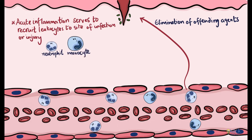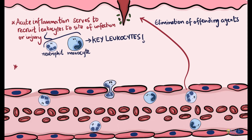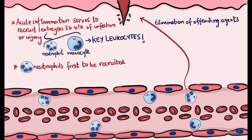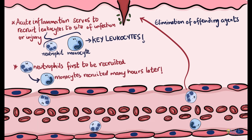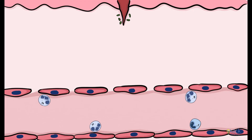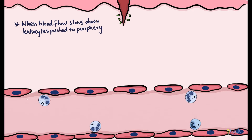Neutrophils and monocytes are key leukocytes that are recruited and are capable of phagocytosis. In acute inflammation, neutrophils are the first batch of leukocytes to be recruited to the site of infection, and migration of monocytes follows many hours later. Leukocyte recruitment involves a series of steps; once blood flow slows down, leukocytes are pushed to the periphery and move in close association to the endothelium — a process called margination.